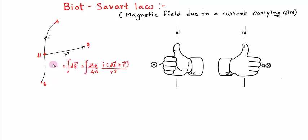So this is my net magnetic field due to wire AB at this point Q. The direction is going to be dL bar cross R bar, which is into the page. So the magnetic field direction will go into the page. This cross symbol here means into the page.